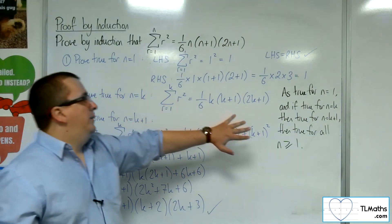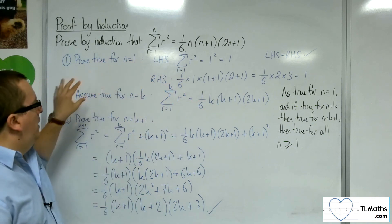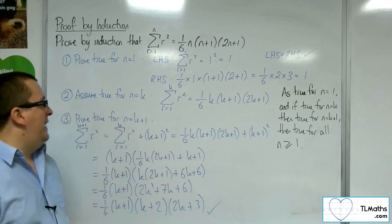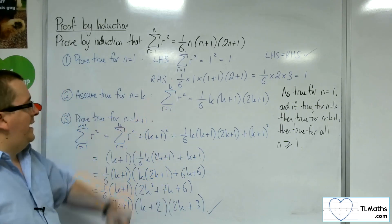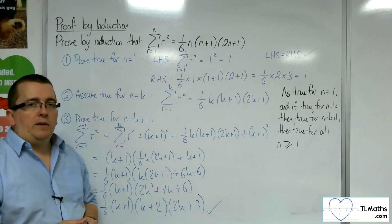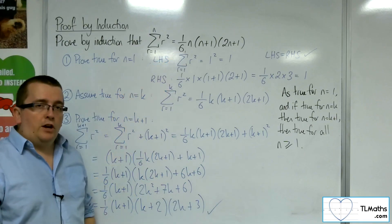So, that would be my concluding statement. I have proved it here. I proved it was true for n equals 1. I assumed it was true for n equals k. And then I proved that it was true for n equals k plus 1, if true for n equals k. And so, I could write in that concluding statement. And I have proved that this is true by induction.